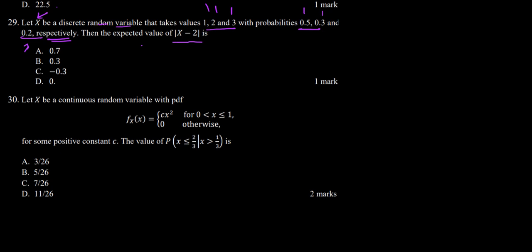What we need to find is the expected value of |X − 2|. First, let us check what values |X − 2| can take. From the three values 1, 2, and 3, we substitute into the expression X − 2 to find the possible outcomes.